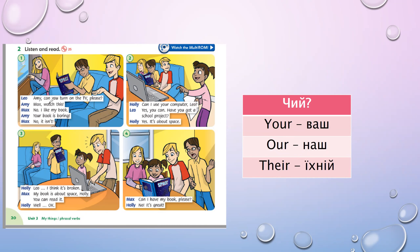'Emmy, can you turn on the TV please?' — there are pronouns here but not possessive ones. We need possessive ones. Max: 'Watch this.' 'No, I like my book.' So we underline 'my' — I like my book — моя книжка, мені подобається моя книжка. 'Your book is boring.' Yes — your book — твоя книжка — that's a possessive pronoun.